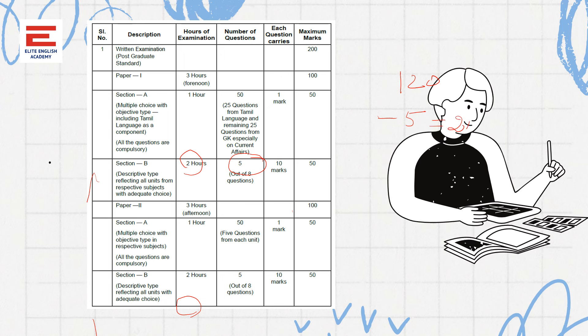120 minutes for five questions means we can allot 24 minutes per question. I would suggest that since it is a very important examination, spending two to three minutes for brainstorming is important — gather ideas and consolidate them. Then take 15 to 20 minutes to write the actual essay. Finally, you must spend about ten minutes for review, because when writing an essay we often commit unintentional errors.